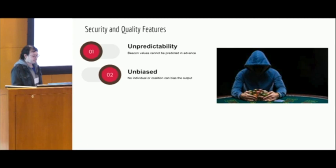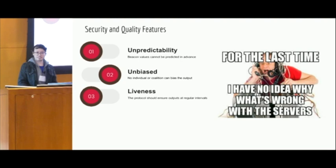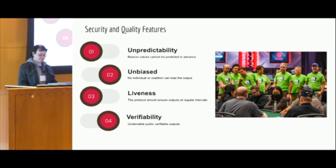Unbiased, especially in blockchain settings. No individual or coalition should be able to bias the outcome of the output, especially where huge values of transactions are involved. Liveness, the protocol should ensure outputs at regular intervals. And verifiability, especially in a blockchain setting where you want public validation of these random outputs.